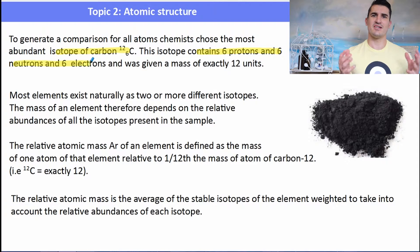So to generate a comparison, chemists needed a standard, and they chose the most abundant form of carbon, carbon-12. It contains exactly six protons and six neutrons, and it was given a mass, or a relative atomic mass, of exactly twelve units.